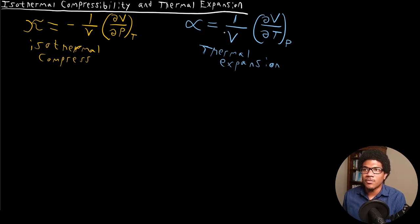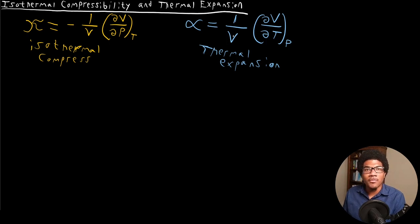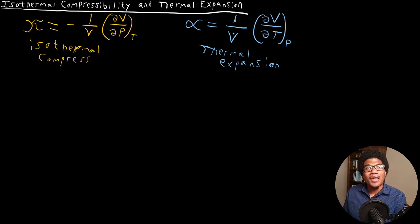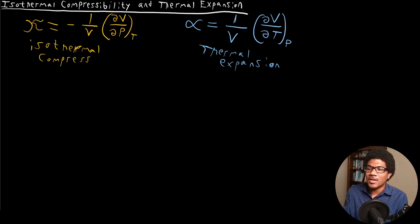All the information about the fractional change in volume with respect to temperature and pressure respectively is locked up in the derivative. This 1 over V term that exists in both of these expressions makes them intensive properties — properties that don't change with the system size. Think about density: density is mass over volume, an intensive property. Here, we're dividing by volume to create an intensive property for these fractional changes in volume.